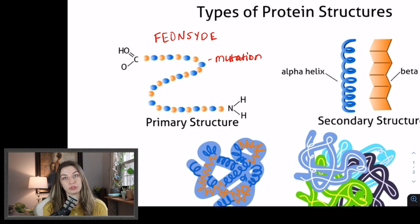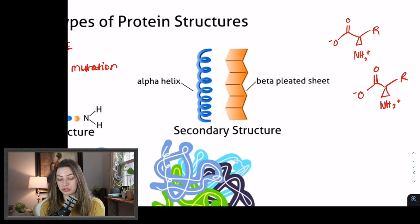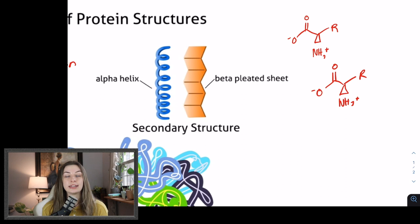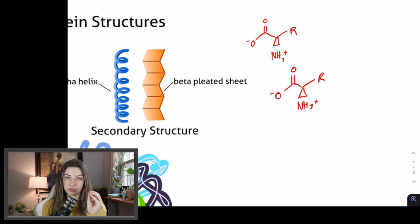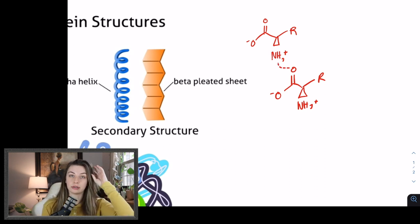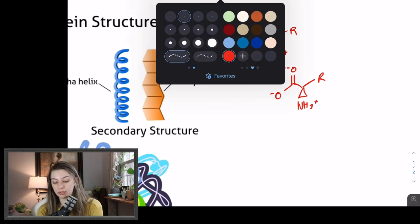Moving on to secondary structure. The important thing for secondary structure — you'll hear it talked about as local interactions, which is the language people use to describe it. But I like to say it is the hydrogen bonds between the backbones of the amino acid chain. I've put two amino acids here with random R groups because the R groups don't matter for secondary structure — it's all about backbone interactions. Hydrogen bonds are relatively strong, so these are good strong interactions.